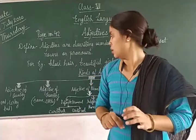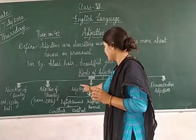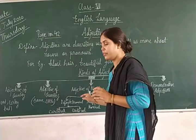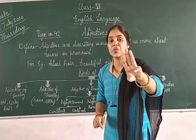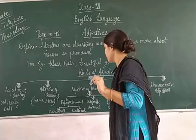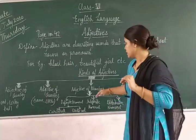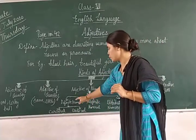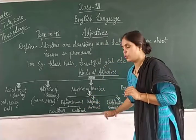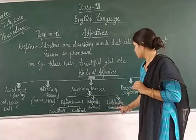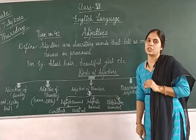Adjective of number is also divided into three parts: the first one is definite numeral adjective, the second one is indefinite numeral adjective, and the third one is distributive numeral adjective.